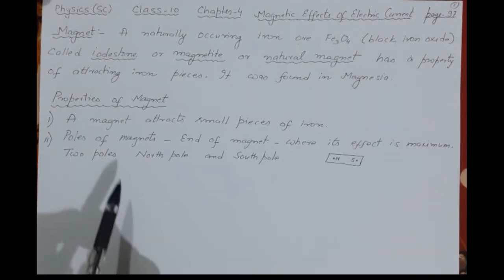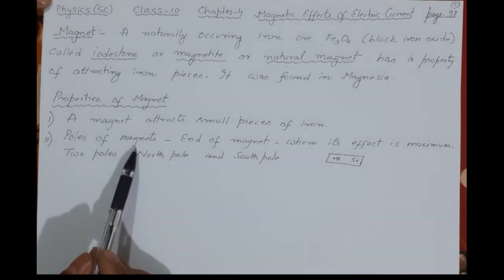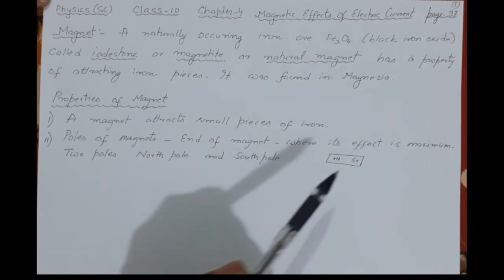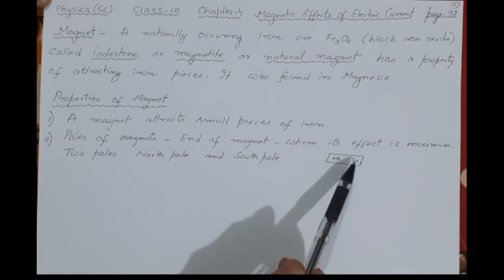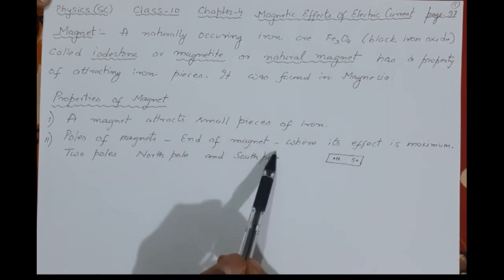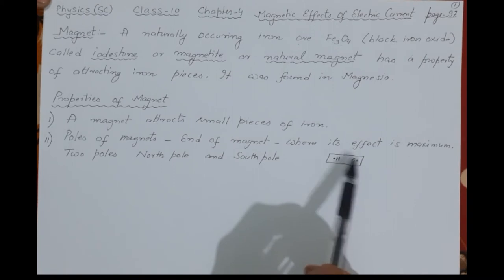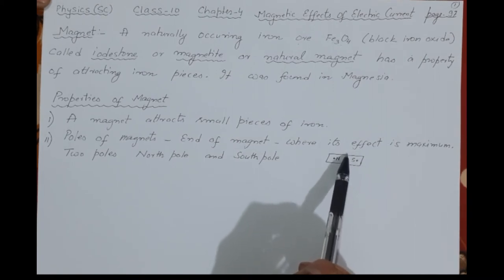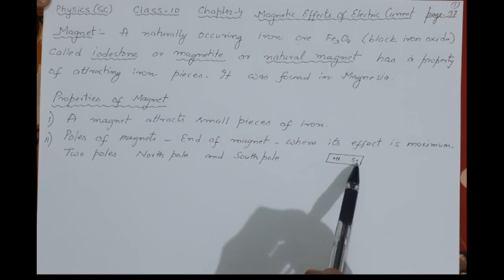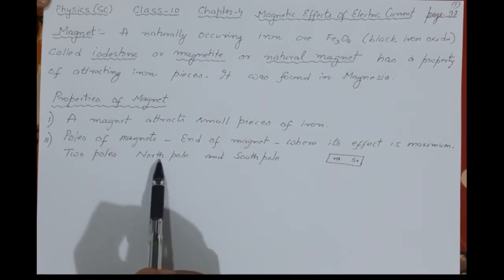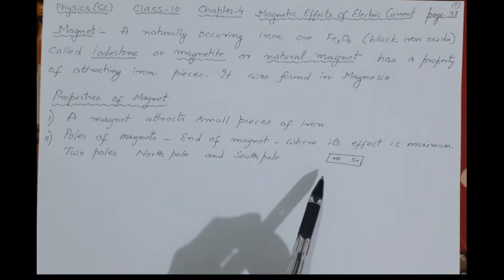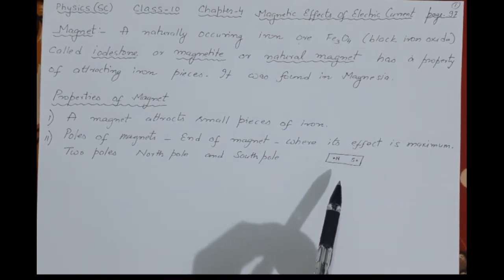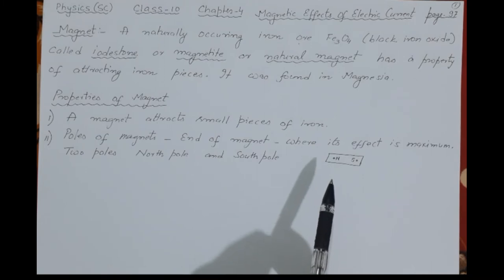The second property is that a magnet has poles — not plus and minus, but a north pole and a south pole. At each end of the magnet, the effect is maximum; the magnet is very powerful at its poles. As a whole, the magnet can attract things, but attraction is strongest at the poles. This is the second property: a magnet has two poles, north and south.